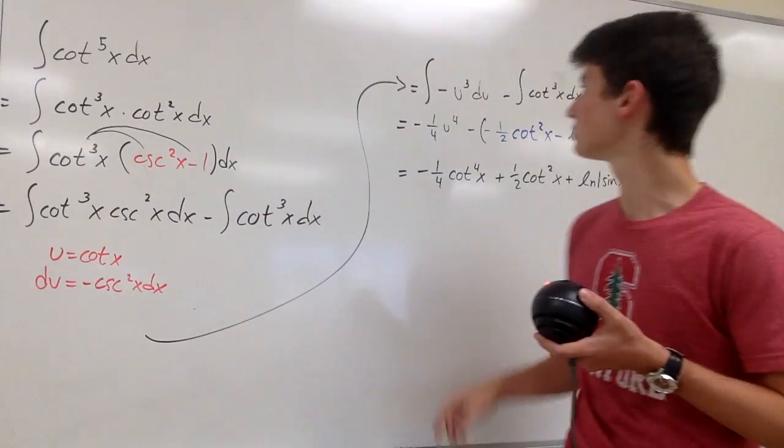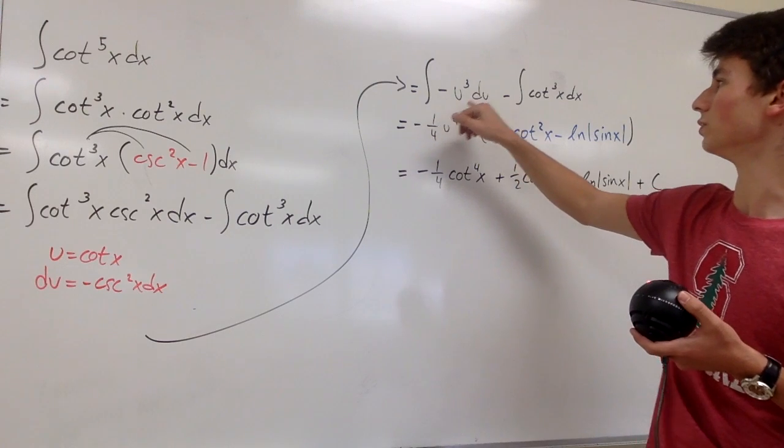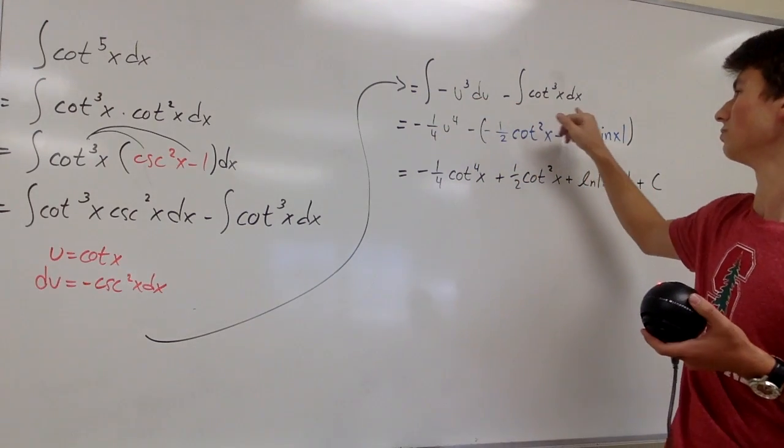We can plug this back in to get the integral of negative u cubed du minus the integral of cotangent cubed of x dx.